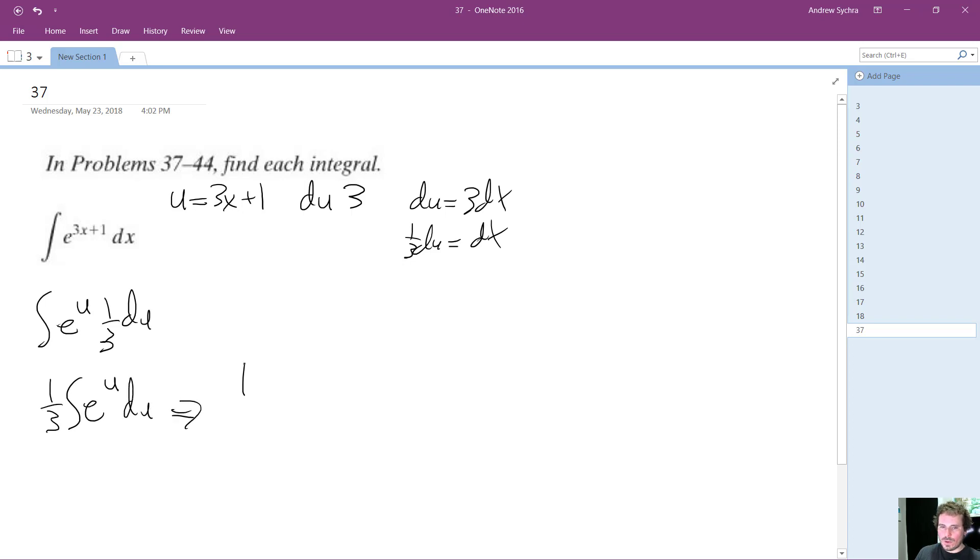So what we end up with is one third e raised to the u plus c. And then we just sub back in for our u. So we ultimately end up with one third e raised to 3x plus 1 plus c. And that's it.